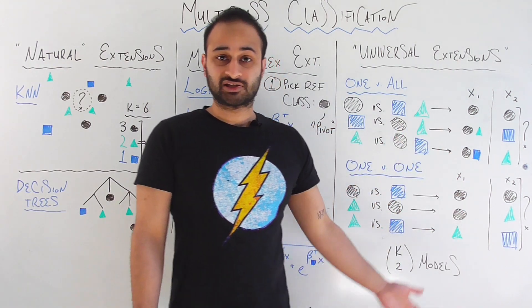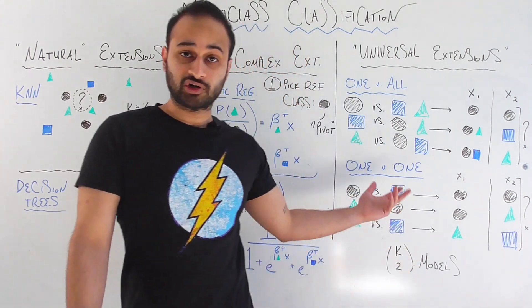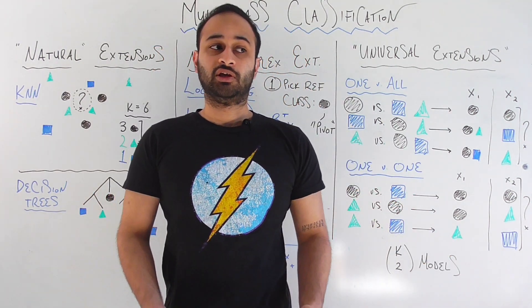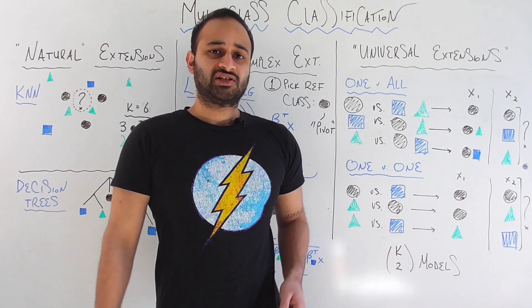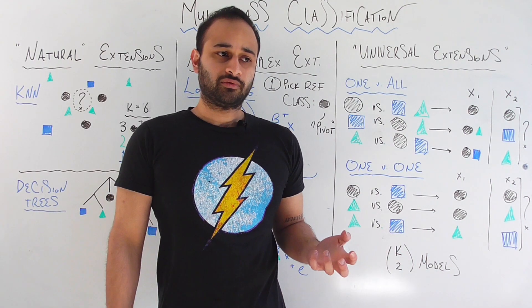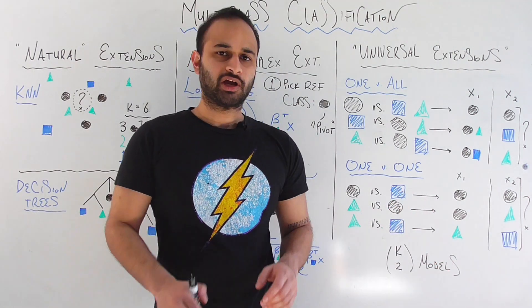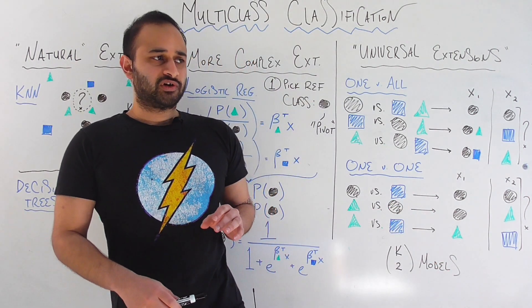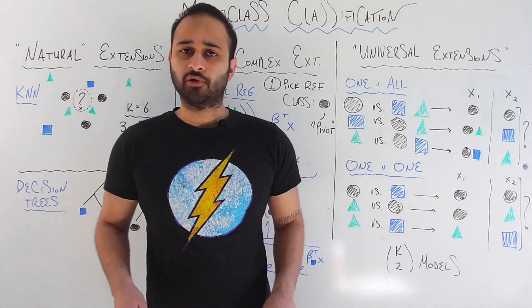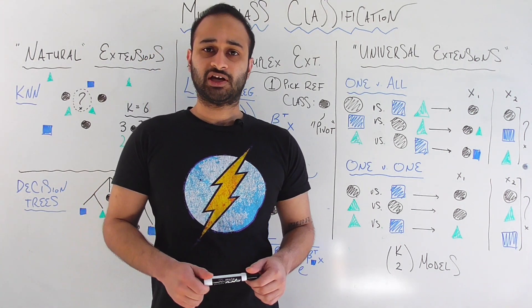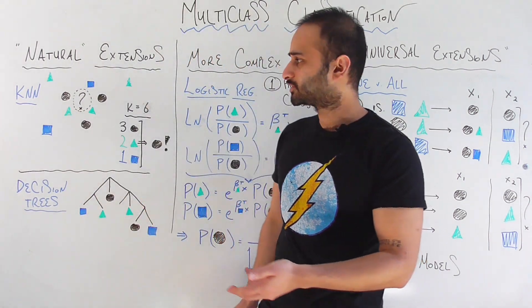Right now it sounds like the universal technique is going to be the best — why would we even bother doing anything else? But we'll look at the huge disadvantages of the universal technique. It kind of stems from the fact that they're so general that they are not too powerful for every method. Let's first start off simple by talking about two of our most favorite binary classification techniques and see how they naturally extend to the multi-class case.